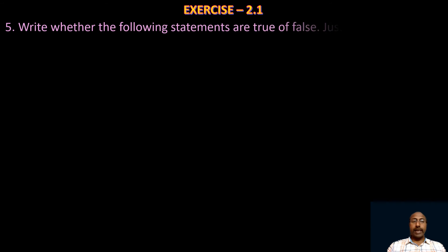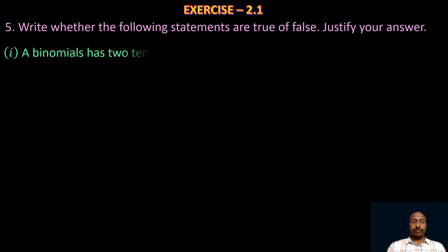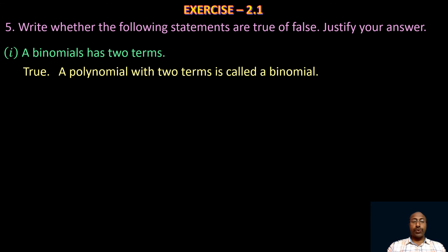Let us go to the fifth problem: whether the following statements are true or false — justify your answer. The first one: a binomial has two terms. Yes, it is true, because a polynomial with two terms is called a binomial. So the given statement is true.